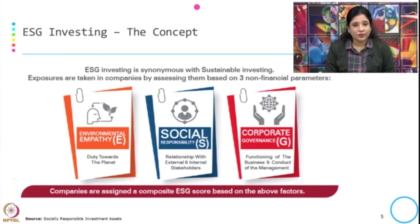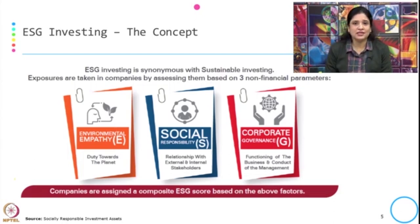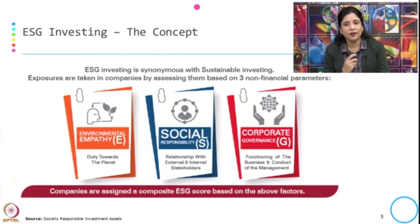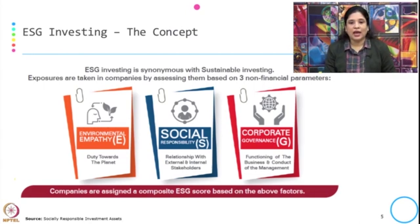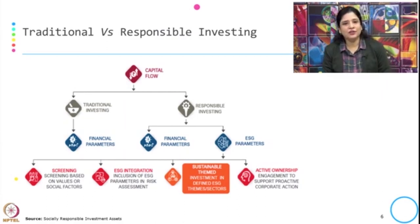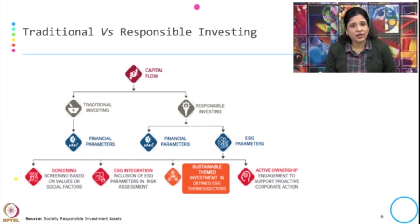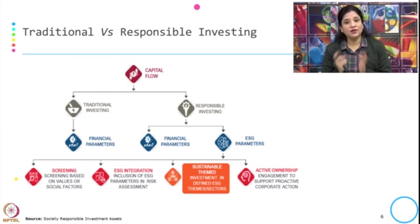What corporates get in return for maintaining their ESG requirements is higher profit, brand building, and customer patronage. ESG investing is synonymous with sustainable investing. Exposure is taken in companies by assessing them on three non-financial parameters — environment, social, and corporate governance — along with financial parameters. Environmental empathy is the duty towards the planet; social responsibility covers relationships with external and internal stakeholders; and corporate governance covers the functioning of business and conduct of management. Companies are assigned a composite ESG score based on all these factors. The difference between traditional and responsible investing is clear: traditional investing focuses on financial parameters, while responsible investing also incorporates ESG parameters.